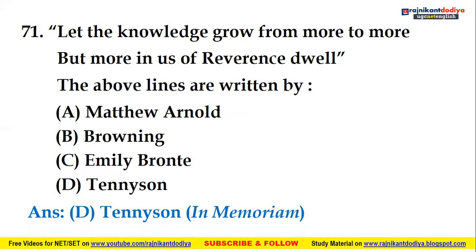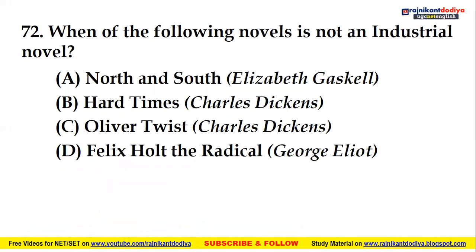The 72nd question — note there is a typo, it should read 'which' not 'when': which of the following novels is not an industrial novel? The options are North and South by Elizabeth Gaskell, Hard Times by Charles Dickens, Oliver Twist by Charles Dickens, and Felix Holt the Radical by George Eliot. Option C is right — Oliver Twist was not an industrial novel; the other three are industrial novels.